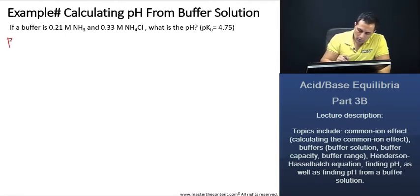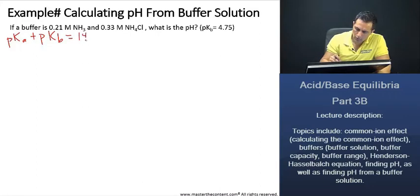We know from our previous lecture that pKa plus pKb is going to equal 14, right? And because of that, we can just go ahead and find the pKa, which is just going to be 14 minus pKb, which is actually going to be equal to 9.25.